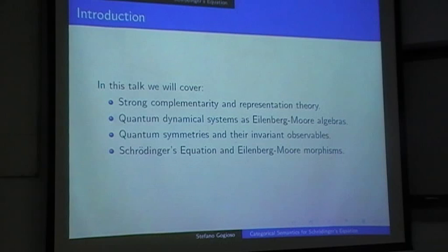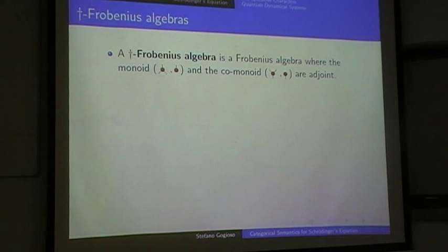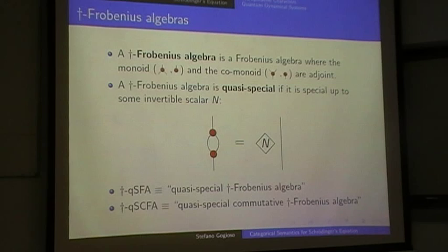To start off, just some basics which I hope are by now a bit more familiar. We'll work with Dagger-Frobenius algebras, which have an adjoined monoid and comonoid, and we'll work with quasi-special ones, which are special up to some invertible scalar. I have some shorthands: I'll just say 'structure' to mean a Dagger quasi-special Frobenius algebra, and I'll say 'commutative' if necessary.